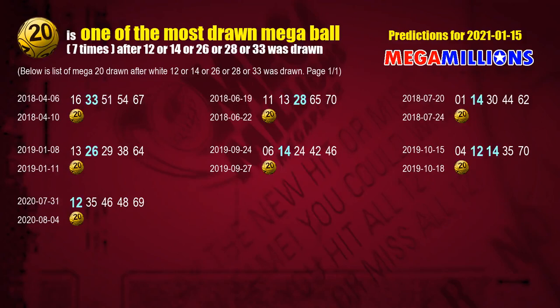The second Mega Ball most drawn after 12, 14, 26, 28, or 33 was drawn is Mega Ball 20.